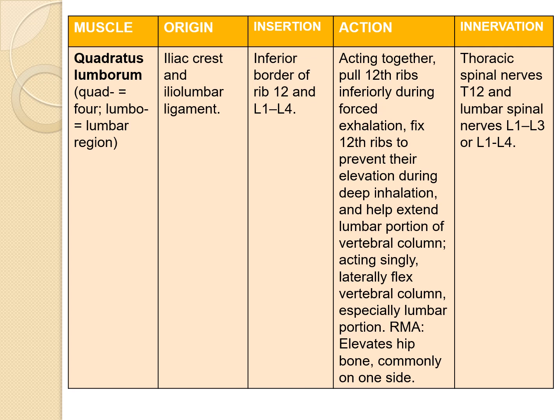The next muscle is quadratus lumborum. Quadra means four; lumbo means lumbar region. Origin: iliac crest and iliolumbar ligament. Insertion: inferior border of the 12th rib and L1 to L4 vertebrae. Actions: acting together, they pull the 12th ribs inferiorly during forced exhalation, fix the 12th ribs to prevent their elevation during deep inhalation, and help extend the lumbar portion of the vertebral column. Acting singly, they laterally flex the vertebral column, especially the lumbar portion; reverse muscle action elevates the hip bone on one side. Innervation: thoracic spinal nerve T12 and lumbar spinal nerves L1 to L3 or L1 to L4.